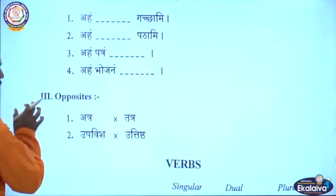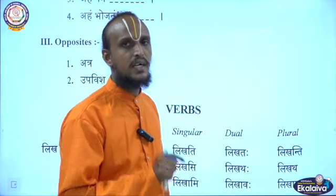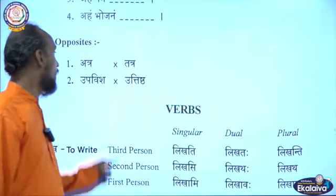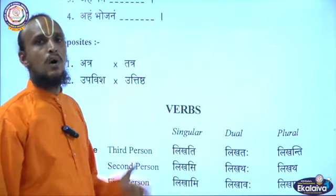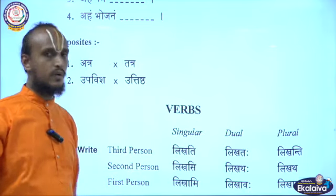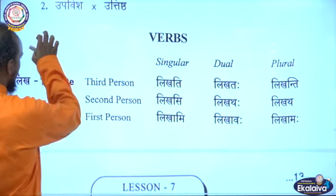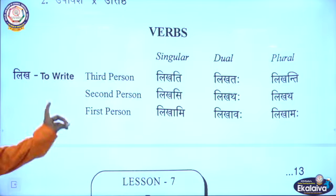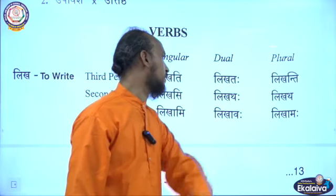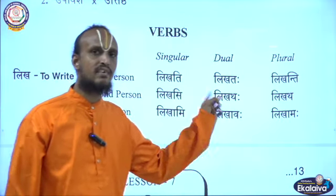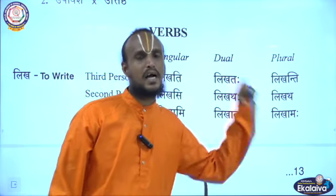Opposites: Atra means here, tatra means there. Upavisha means sit, uttishtha means stand. Now the dhatu — likha dhatu means to write. Conjugations: likhati, likhataha, likhanti, likhasi, likathaha, likatha, likhami, likhavaha, likhamaha.